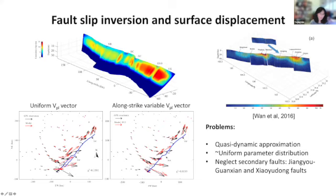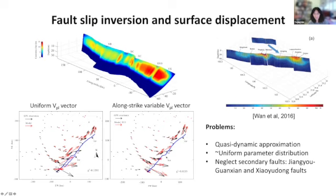We knew from seismic inversion studies that the earthquake started as more or less a thrust fault rupture and then gradually transitioned to a strike-slip rupture. So the modification we made was to allow the tectonic loading vector to have a variable direction along strike. This to some extent corrected some of the discrepancies at near-fault stations, but not all of them — and I think this is tied back to the additional mechanisms that are missing in our model to account for the local intensity of slip.